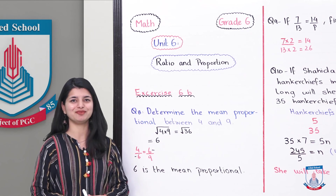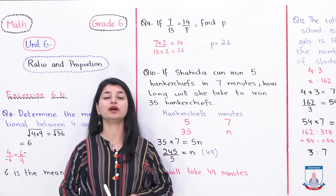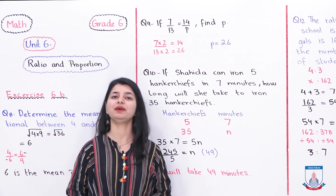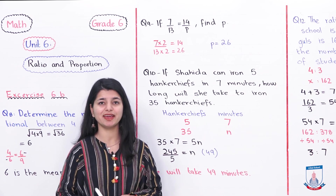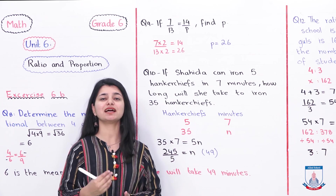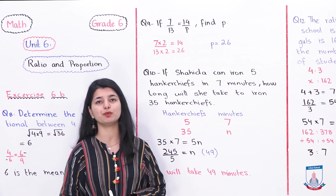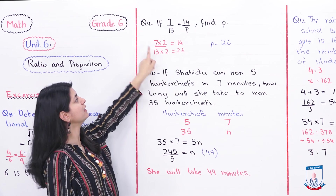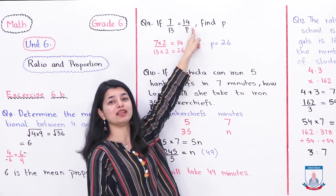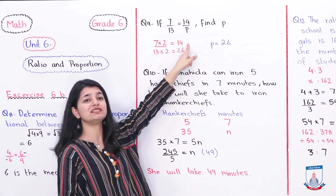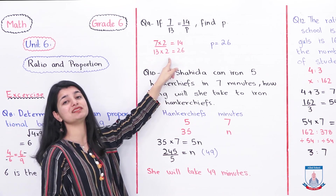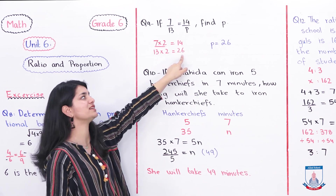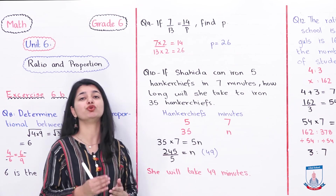Now let's look at question number 9: if 7 over 13 equals 14 over P, find P. You are given two equivalent fractions and you have to find the fourth proportional. Using cross multiplication, we can see that 7 multiplied by 2 gives 14, so we simply multiply 13 by 2 as well. Therefore, P equals 26, because both fractions were multiplied by 2.